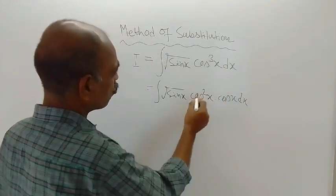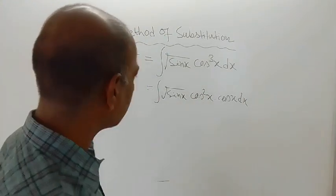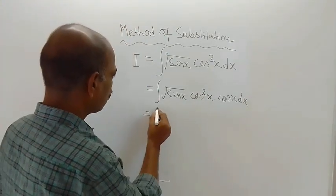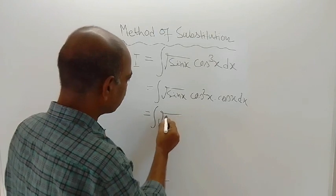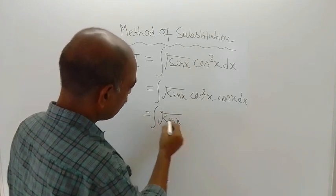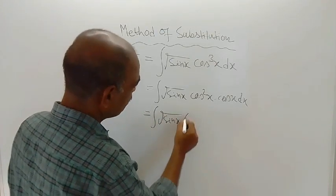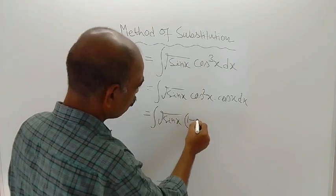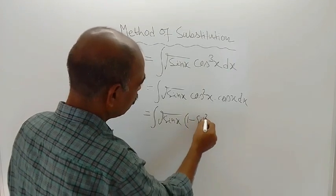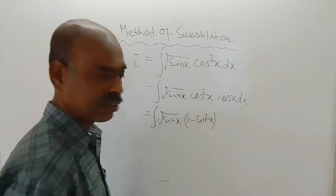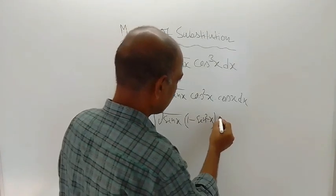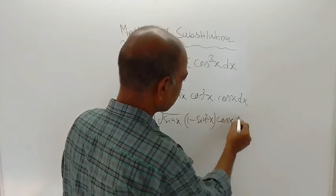Now this cos square x can be written in terms of sin x. So, integration of sin x, root over of sin x into this cos square x, this is equal to 1 minus sin square x. Then cos x dx is there.